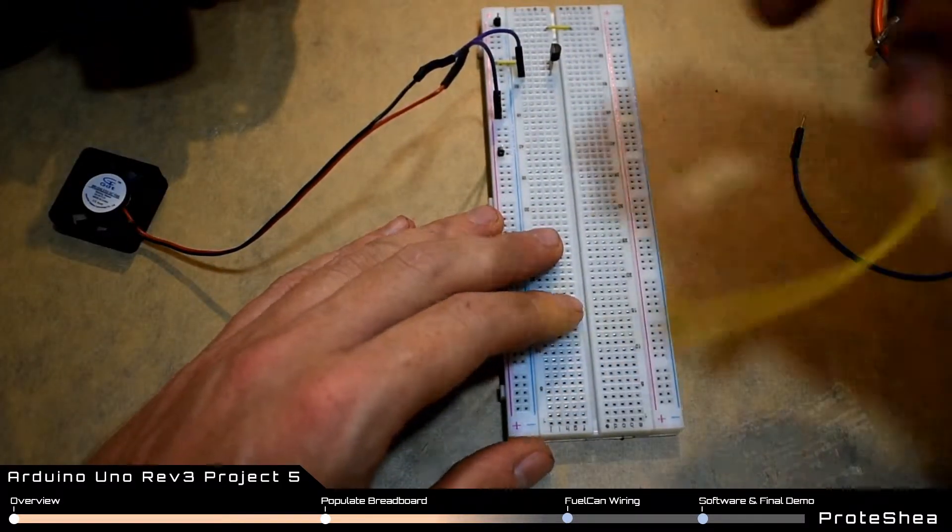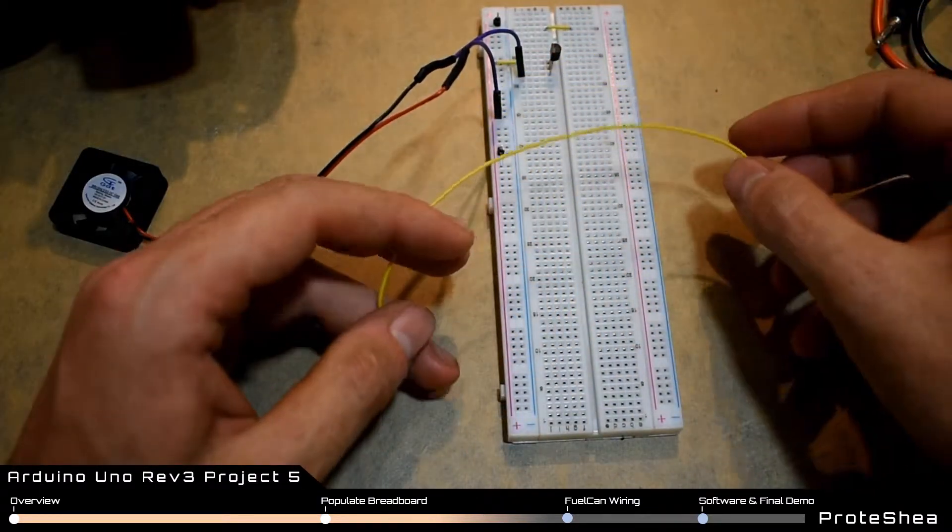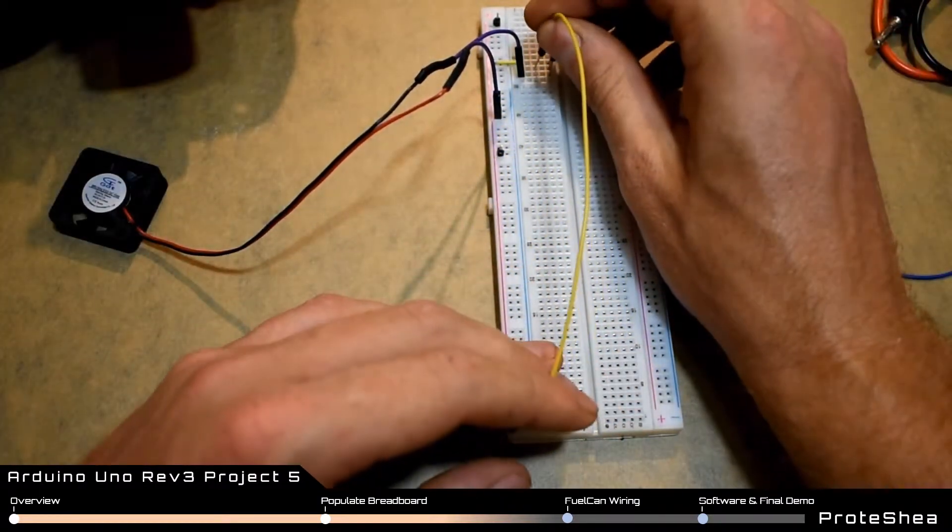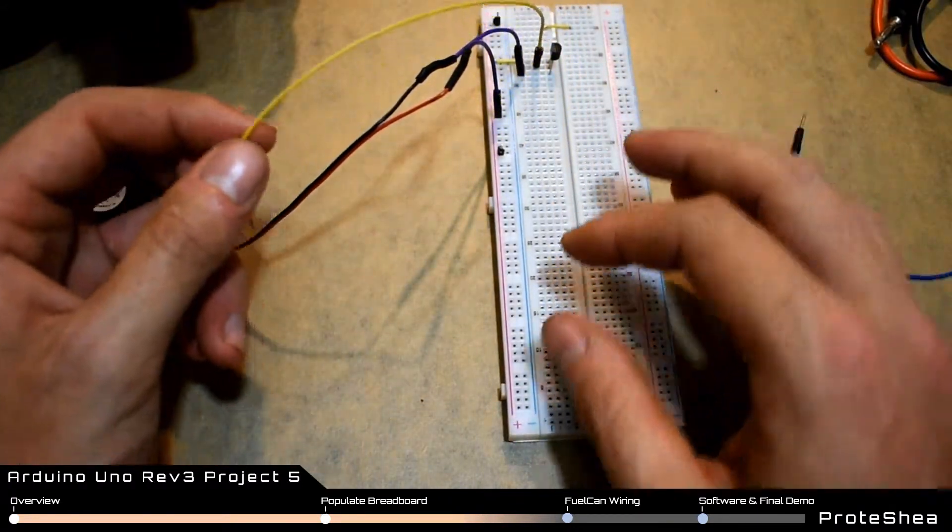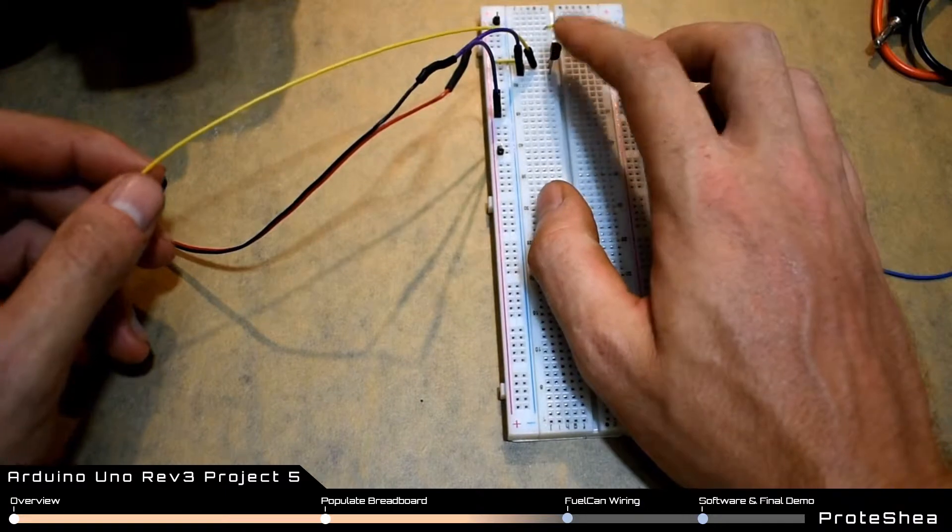Next, you want to use a male-to-male jumper—this one is eight inches long. Plug one end into the node that the gate pin is on, which is the middle pin of the MOSFET.